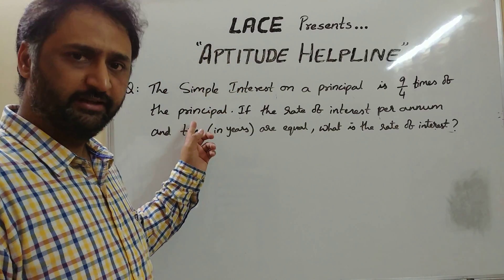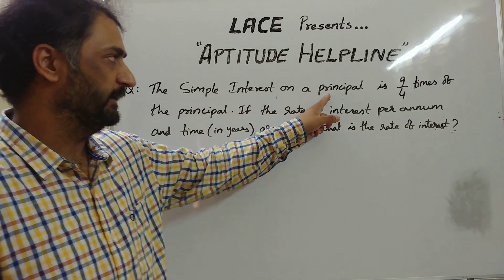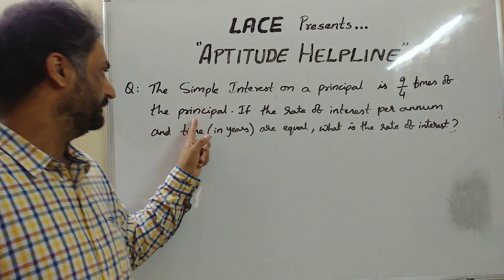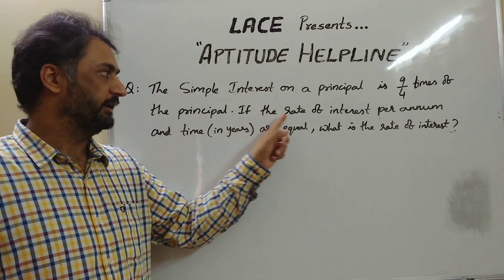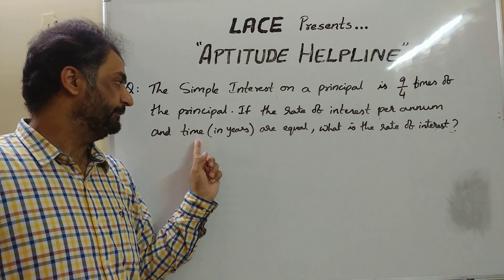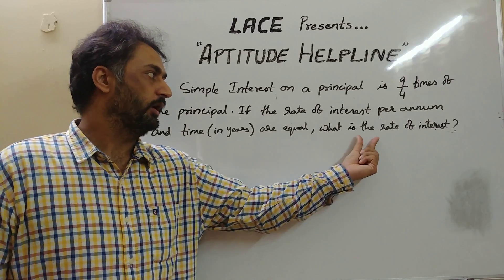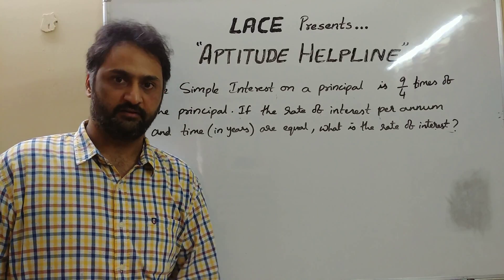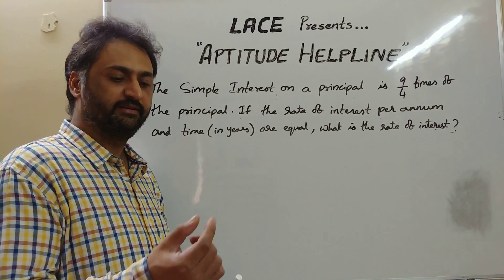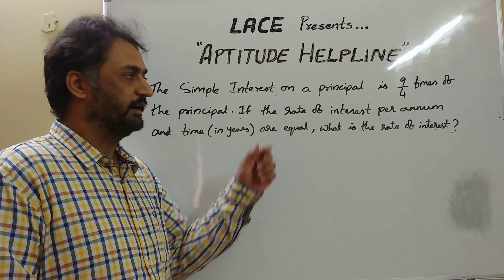The question says: the simple interest on a principal is 9/4 times the principal. If the rate of interest per annum and the time period in years are both equal, what is the rate of interest? Let me give you a basic concept behind simple interest before answering this question.